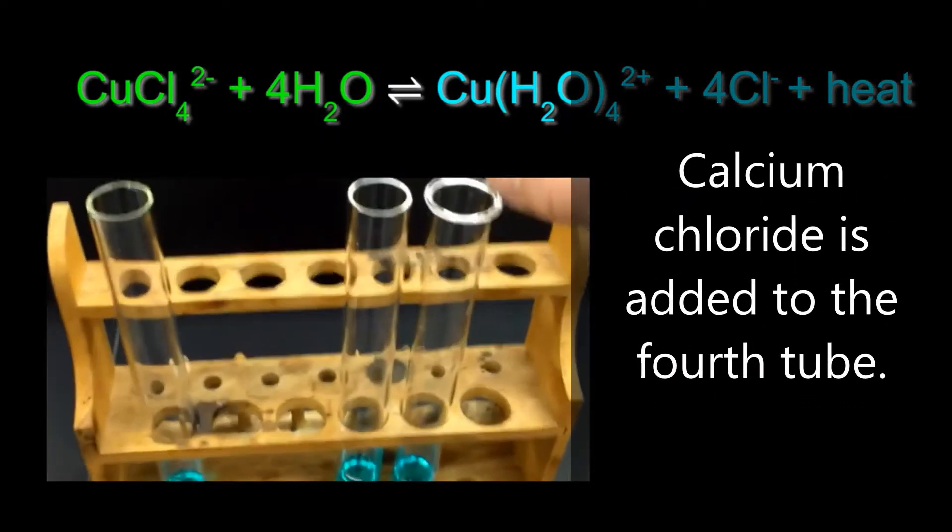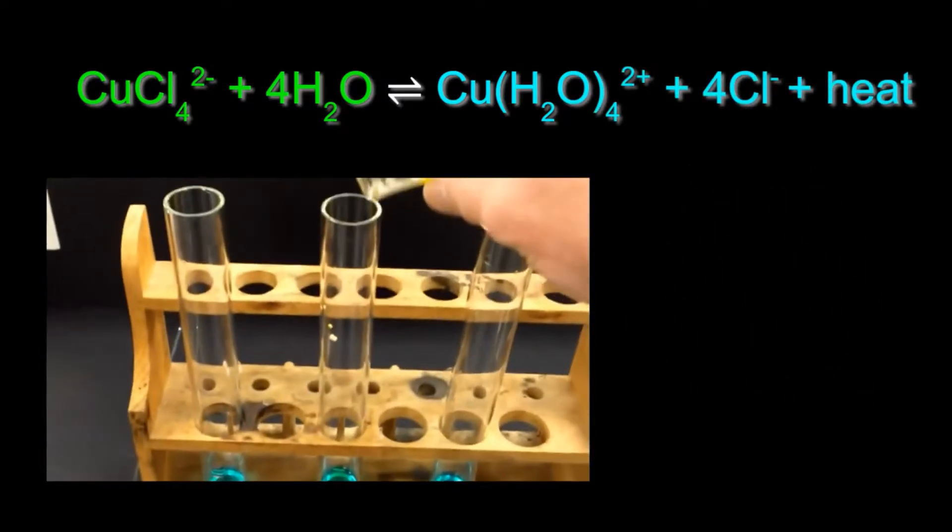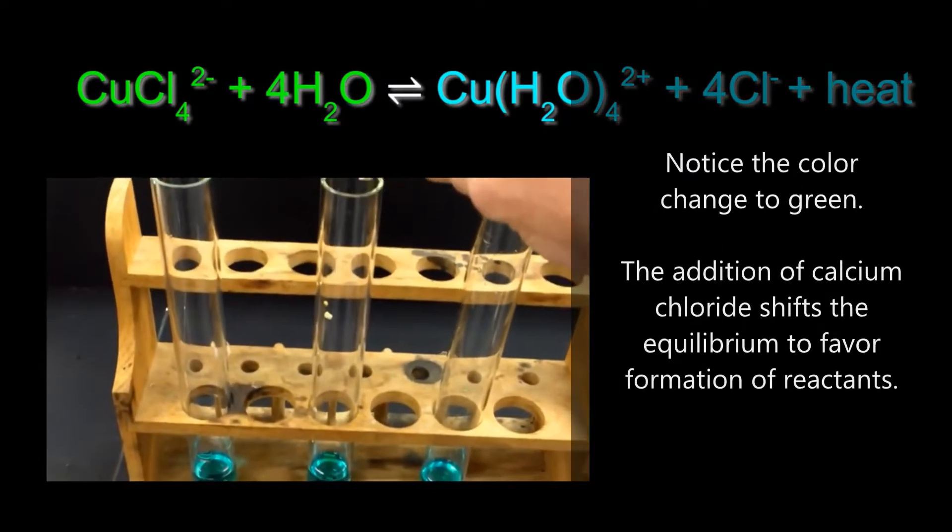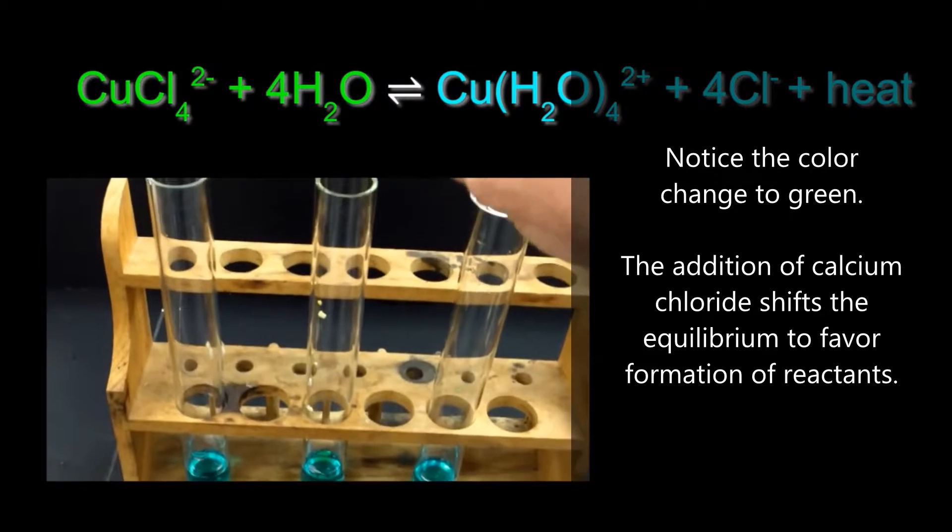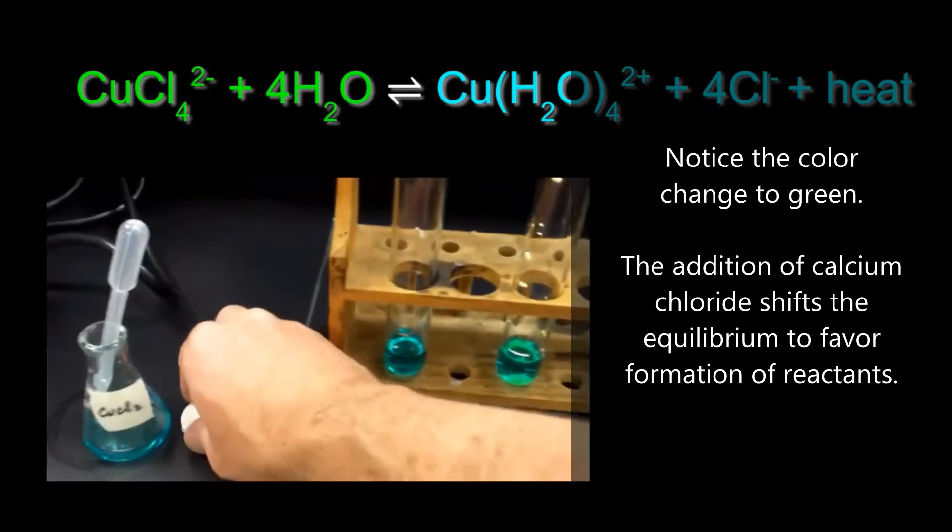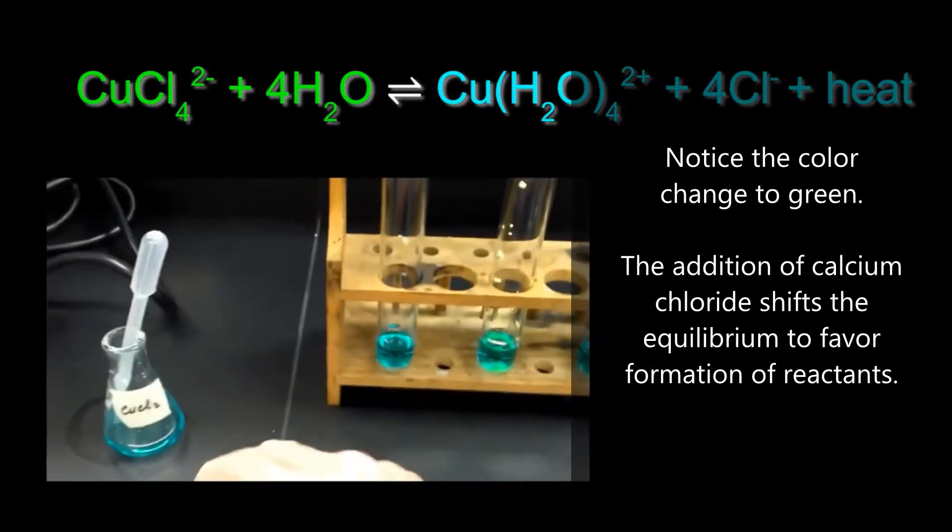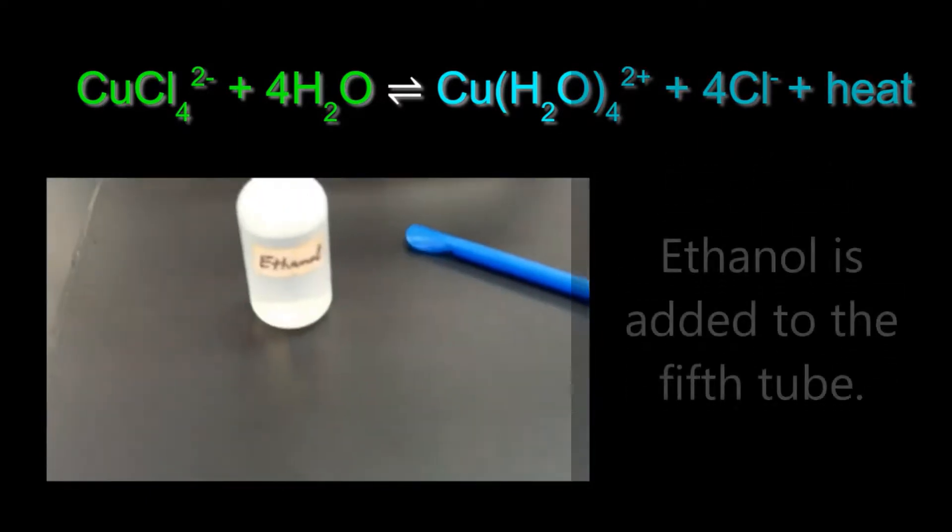Solid calcium chloride is added to the fourth test tube. Notice that the color of this tube starts to turn green. This is because the addition of the chloride ion shifts the equilibrium position.